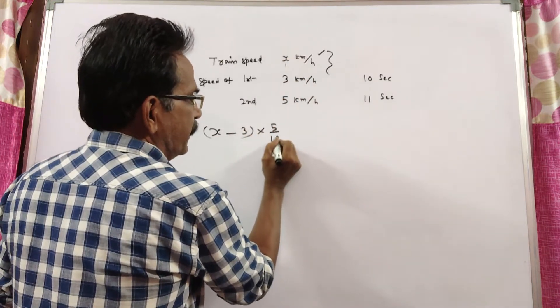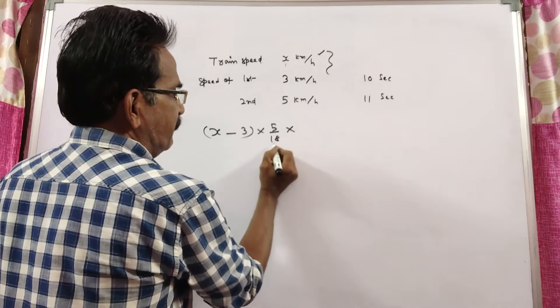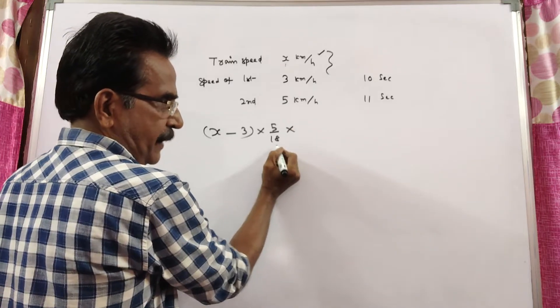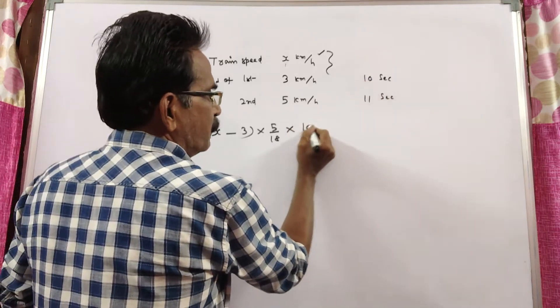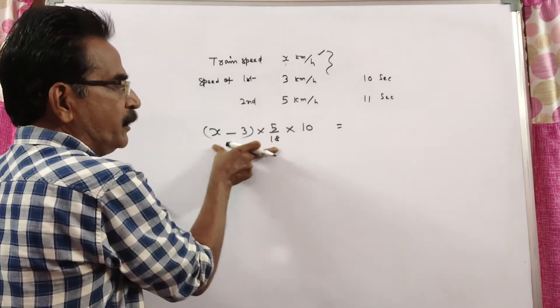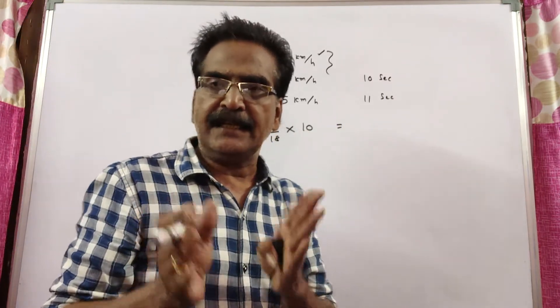Into 5 by 18 into meters per second. This is the velocity while crossing the first man into time. Velocity into time - by doing velocity into time, we get the length of the train.